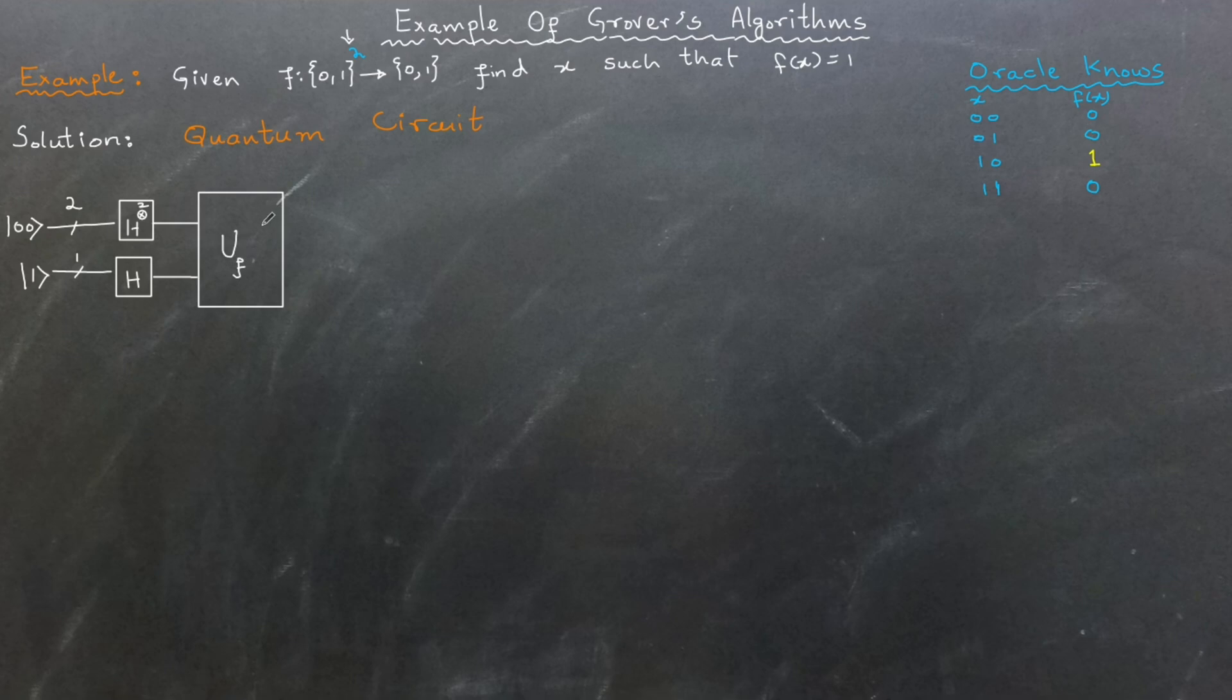When Uf is applied to the state composed of |x⟩ and |−⟩, it modifies the phase of the state. Specifically, the output of Uf will be (-1)^f(x) multiplied by |x⟩ and |−⟩.